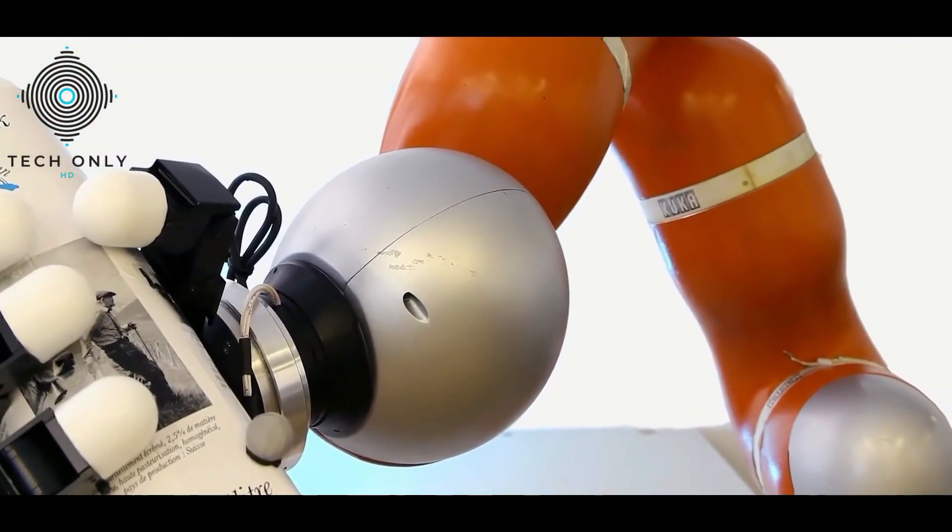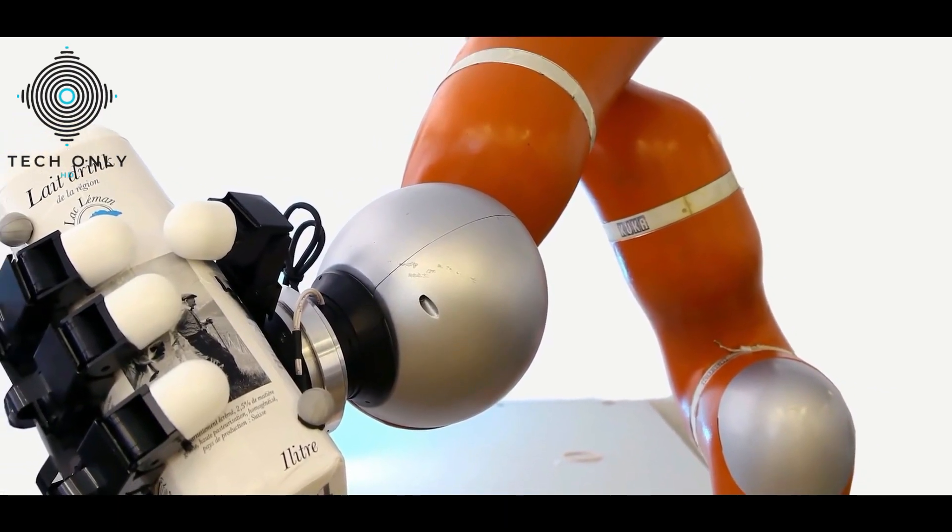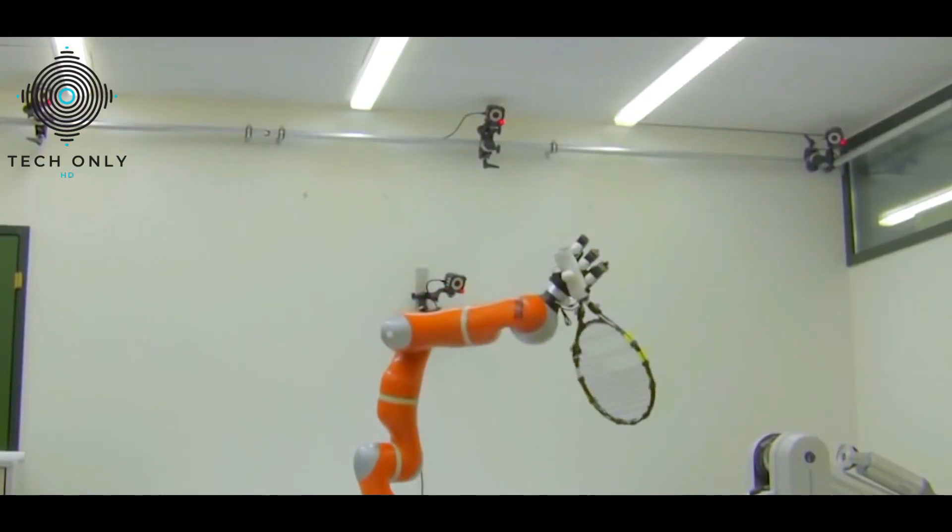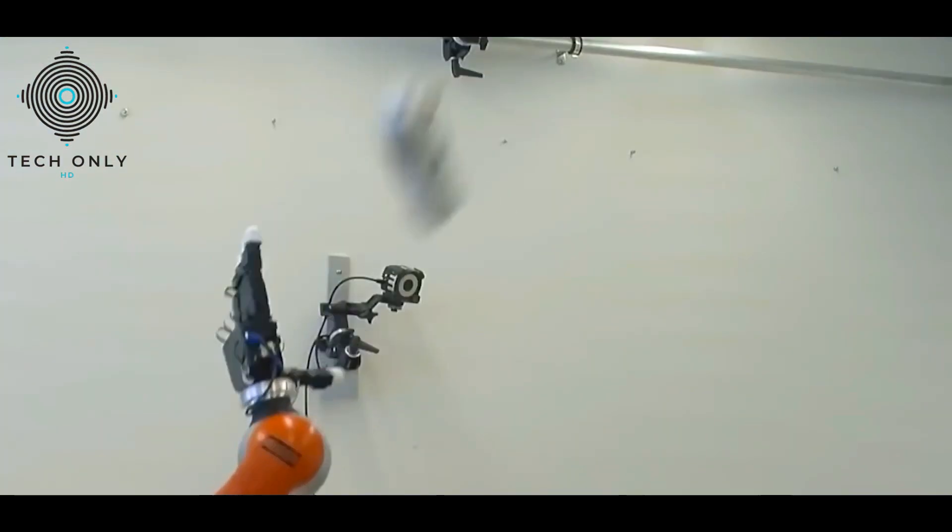Strategically placed cameras enable the robot to detect objects moving in its direction. The onboard computer calculates the trajectory of each object and regulates the arm's movement in response.